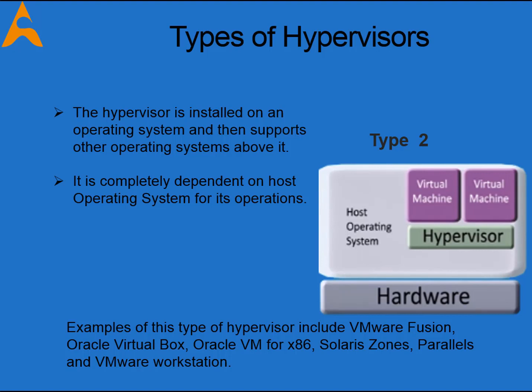Type 2 is completely dependent on the host operating system for its operations. While having a base operating system allows better specification of policies, any problems in the base operating system affect the entire system, even if the hypervisor running above it is secure. Therefore, you need to be more careful while allocating resources to avoid a crash. Examples of Type 2 hypervisors include VMware Fusion, Oracle VirtualBox, Oracle VM for x86, Solaris Zones, Parallels, and VMware Workstation.